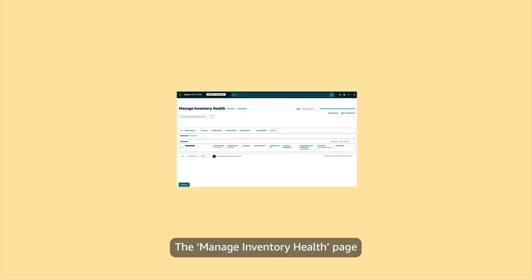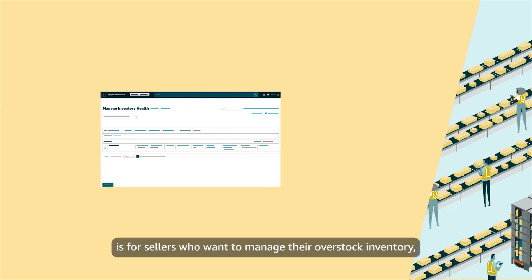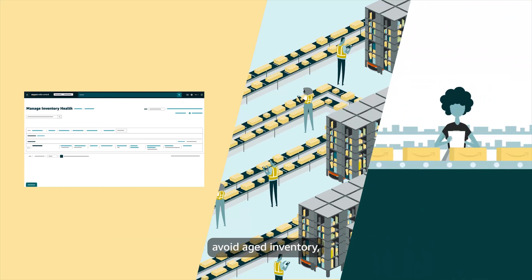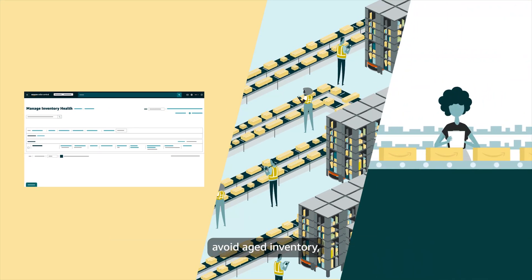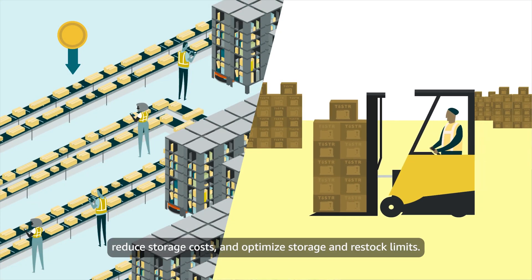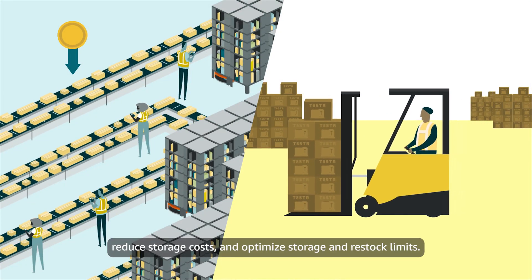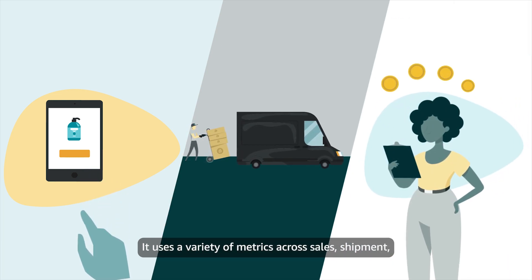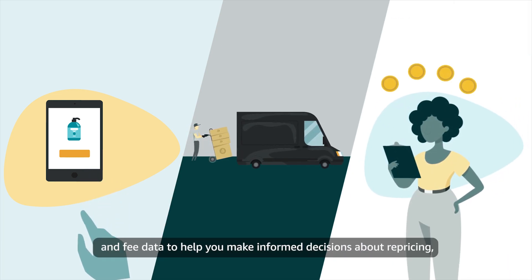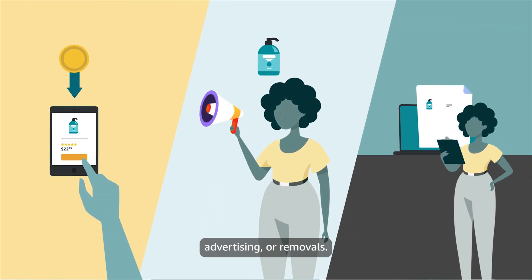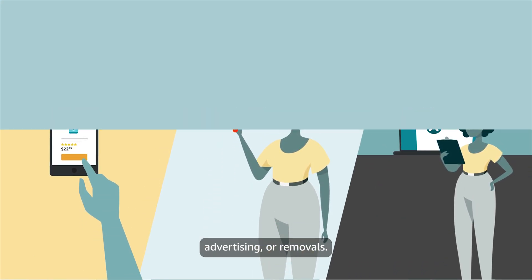The Manage Inventory Health page is for sellers who want to manage their overstock inventory, avoid aged inventory, reduce storage costs, and optimize storage and restock limits. It uses a variety of metrics across sales, shipment, and fee data to help you make informed decisions about repricing, advertising, or removals.